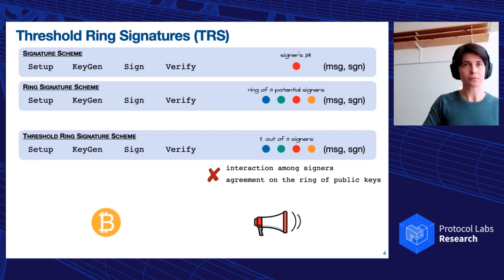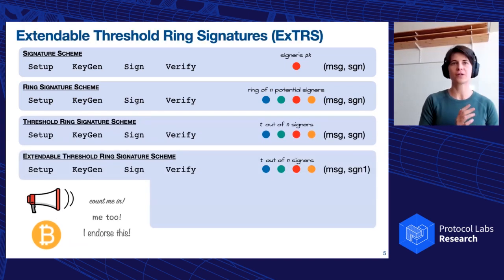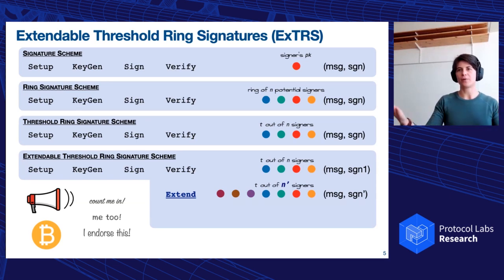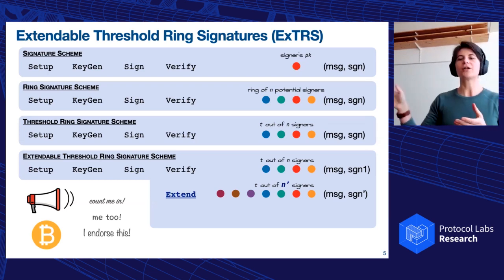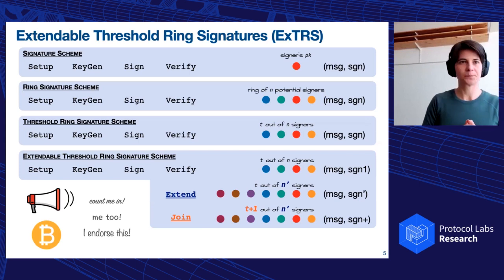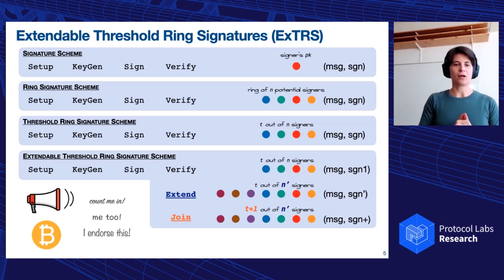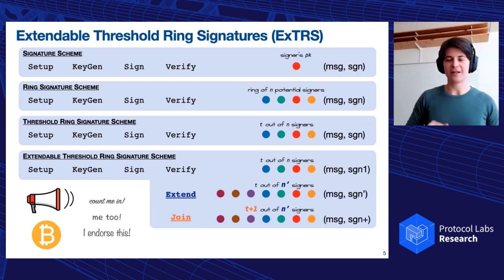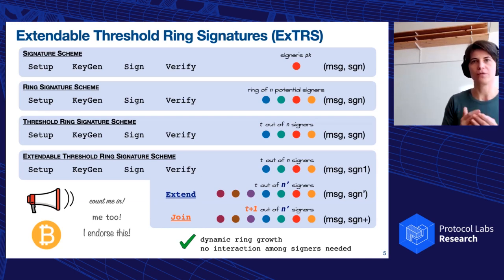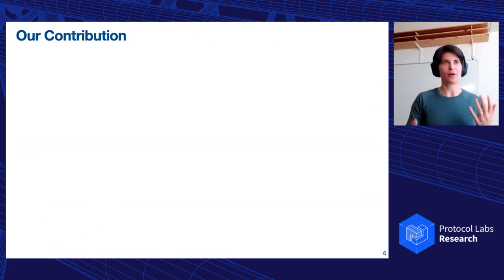So in this work, we propose extendable threshold ring signature schemes. They have the same algorithms as the threshold ring signature scheme, plus a couple of twists. Next, we have an extend procedure, which enables anybody to take a signature scheme, a signature t out of n, and expand it to a t out of n prime when n prime is bigger than n. So I can add some potential signers. And then I can also join to get t plus one. So I can increase the threshold by joining a signature on a ring where my public key appears. What we achieve is that we have a dynamic ring growth and interaction among signers and no interaction among signers is needed. So we remove those two limitations that were there before.